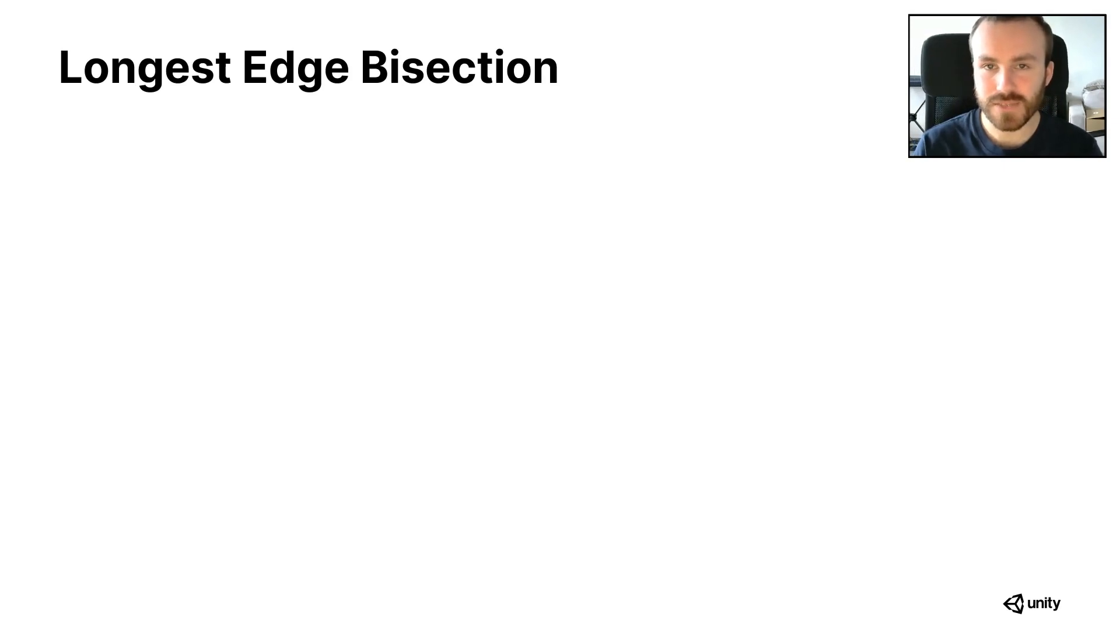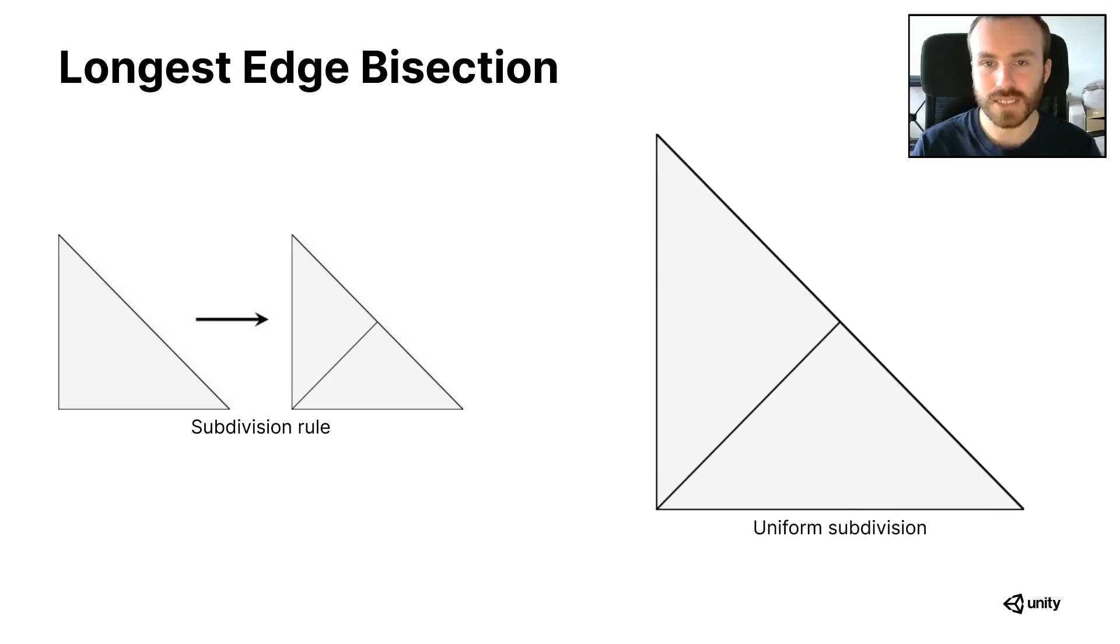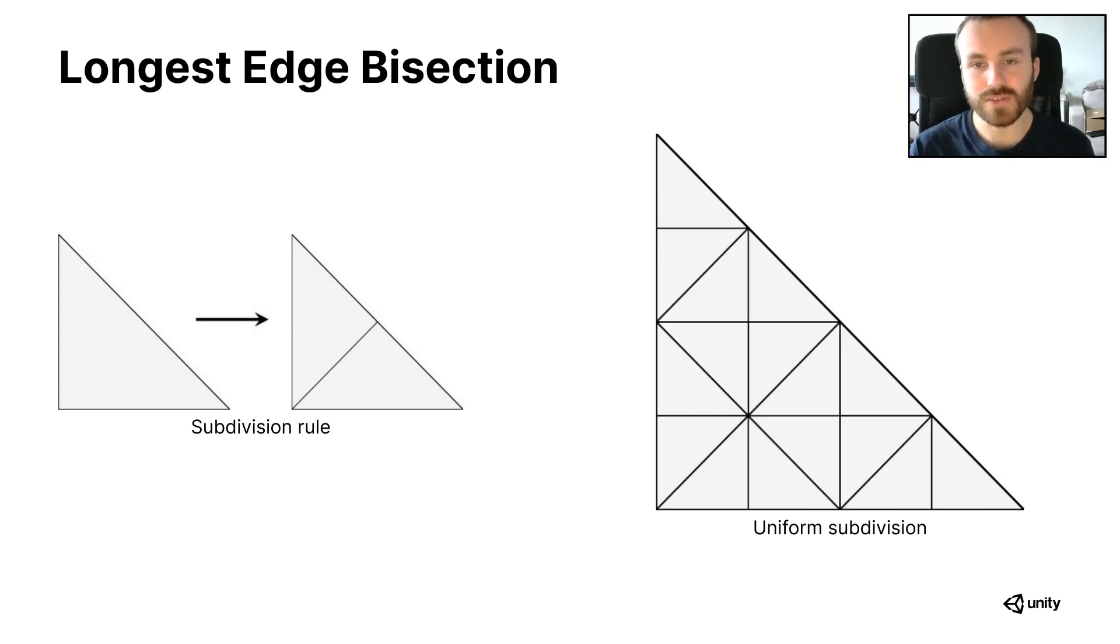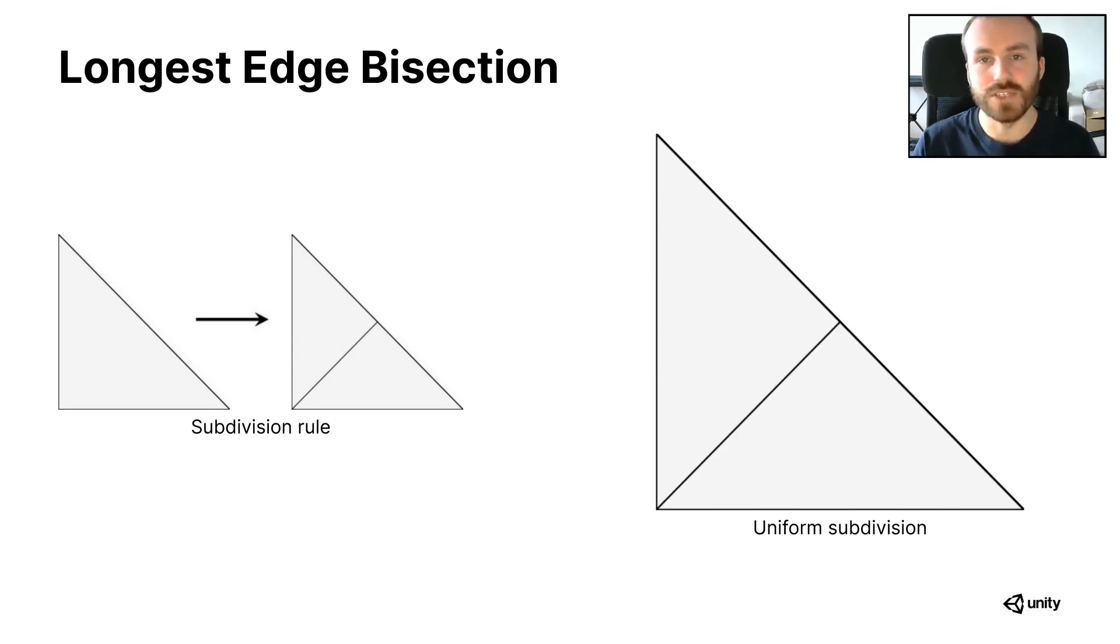Longest edge bisection is a subdivision scheme, and specifically it's the simplest form of subdivision scheme for 2D shapes. It has a simple rule: given a triangle, divide it into two triangles along its longest edge, and this can then be applied recursively on the two new triangles. This uniform subdivision gives us a regular tessellation of the original triangle.